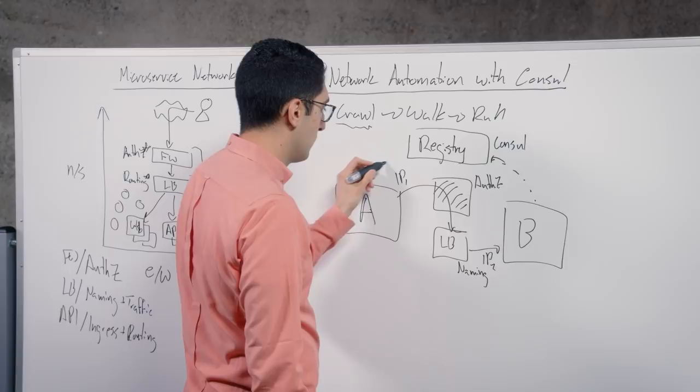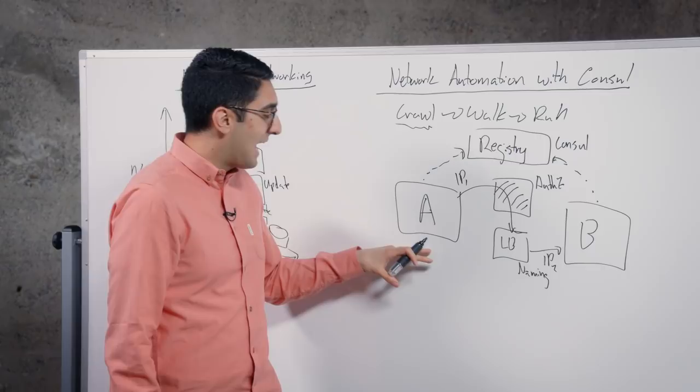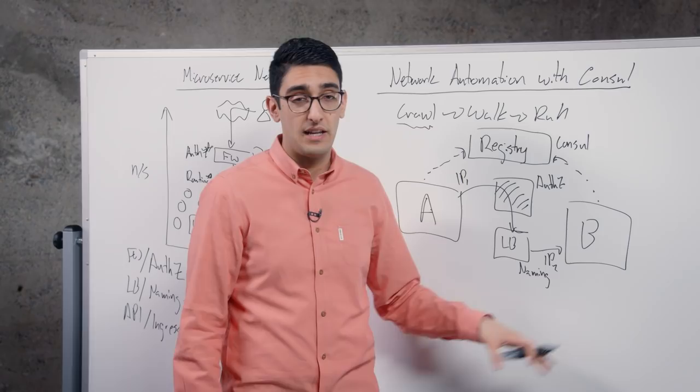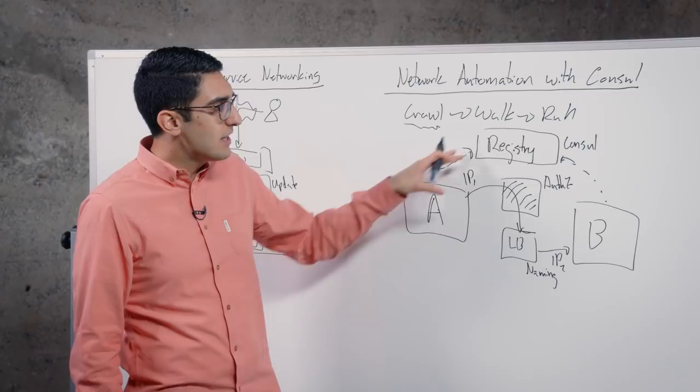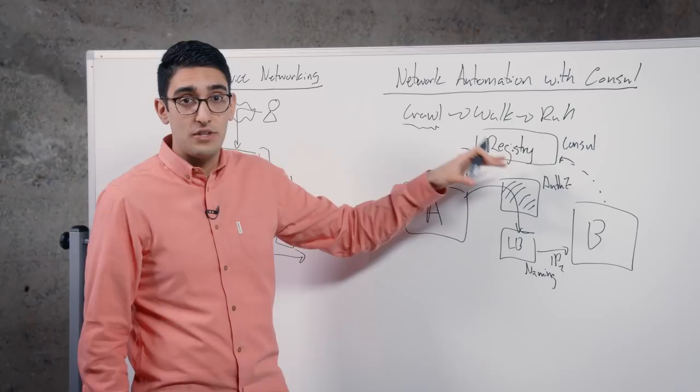This registry, powered by Consul, what it does is as these services get deployed, they get registered. Consul has the bird's eye view of what are all of the applications running in our infrastructure, and it might be that A is running on a physical machine in our private data center, and B is running in a container on top of Kubernetes in the cloud. It doesn't really matter. What matters is the registry has a bird's eye view of what's all of the infrastructure and where is it running.